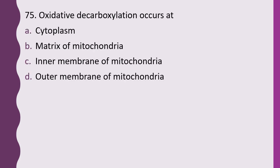Question 75. Oxidative decarboxylation occurs at: cytoplasm, matrix of mitochondria, inner membrane of mitochondria, or outer membrane of mitochondria. The correct answer is option B, the matrix of mitochondria.